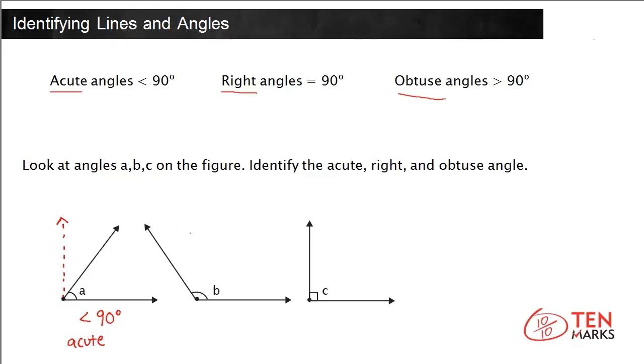Look at angle B. Again, I'm going to draw the dotted line where the 90-degree angle would be. Angle B is greater than 90 degrees, so it is obtuse.